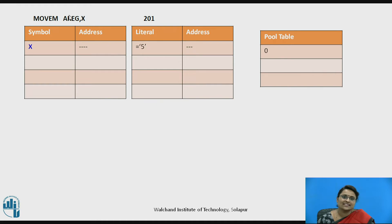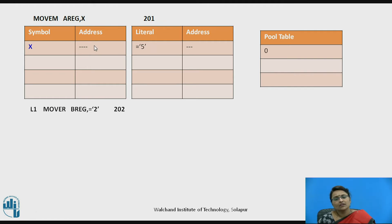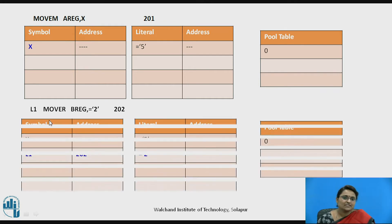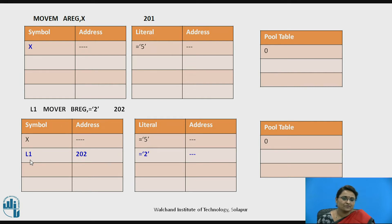For MOVE M with register A and operand X: X is a label used as the operand, so a blank entry for the symbol X is made in the symbol table. Currently the address of that symbol is not known, so the address is blank. The next statement is L1 MOVE R register B with literal 2. L1 is the label, so an entry is made in the symbol table with the current location counter value 202 as its address. The literal 2 is also stored in the literal table.